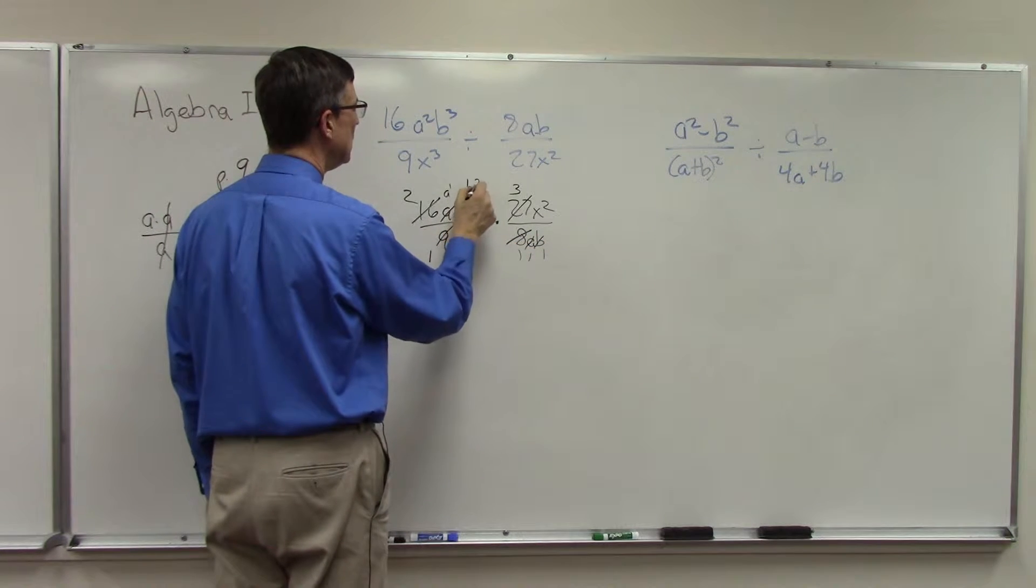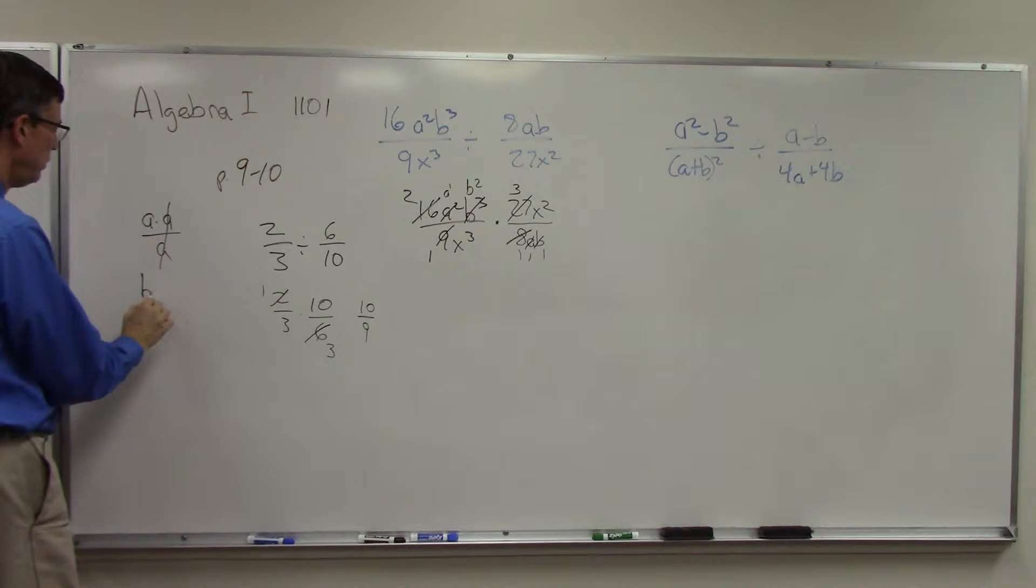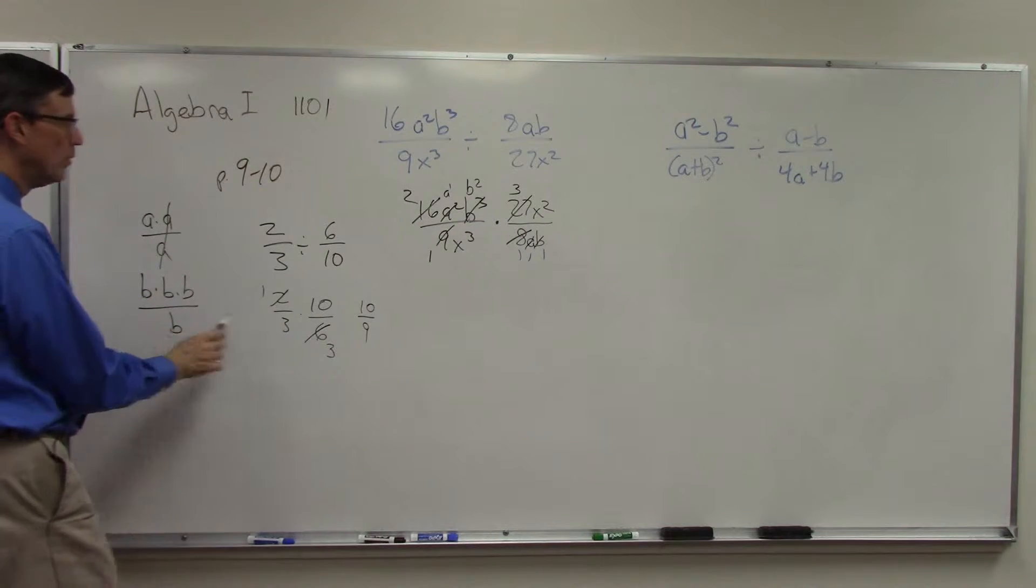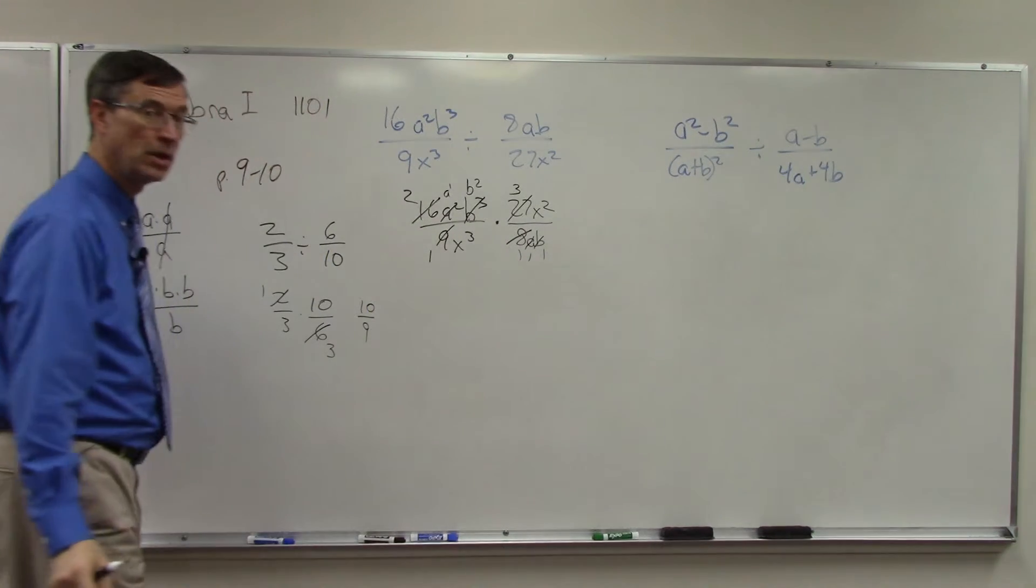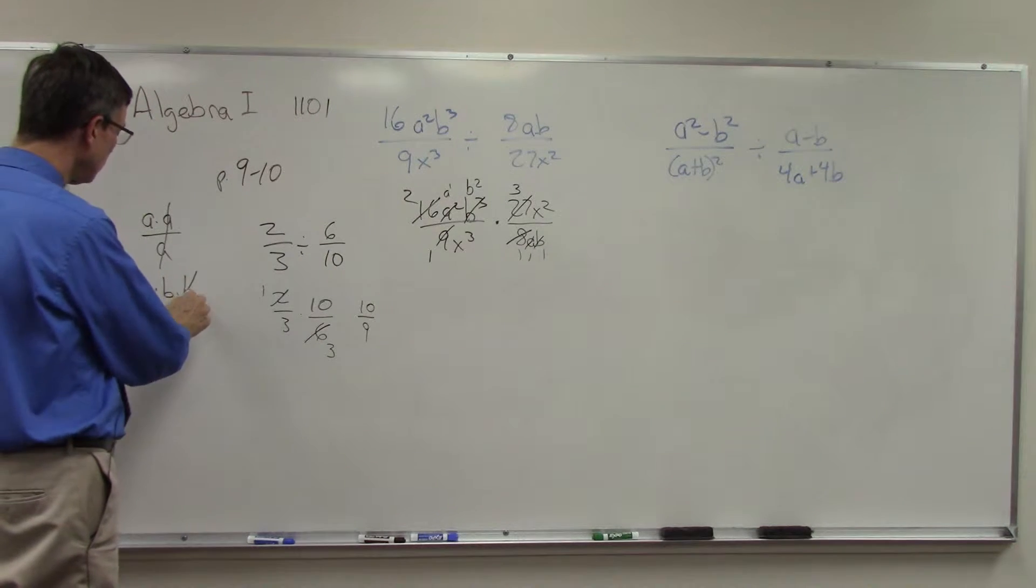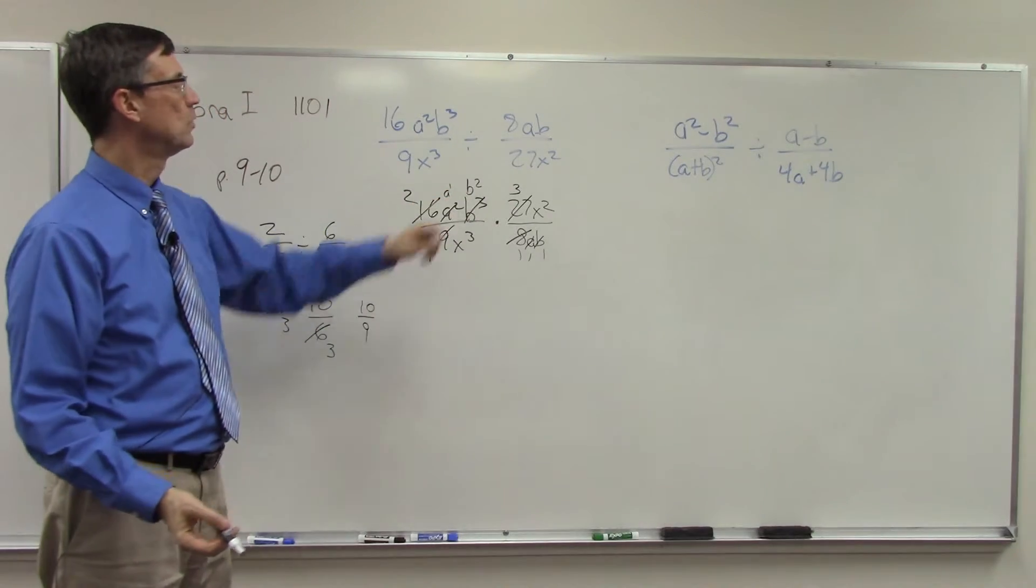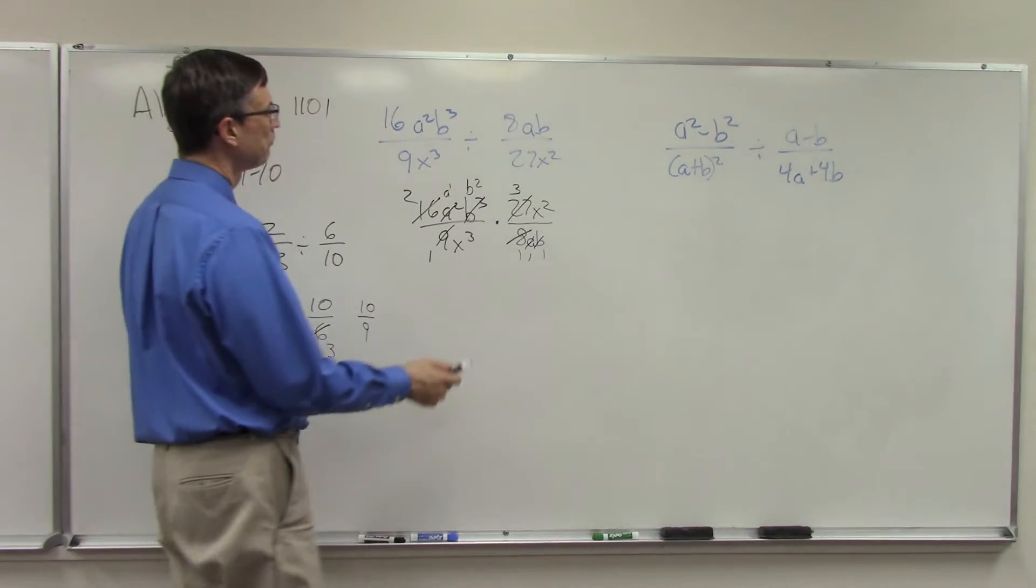The same thing happens with b. That cancels out, and this becomes b². I'm canceling one of them. It's kind of like saying b times b times b is b to the third power, and over here I have one b on the bottom. So one of these will cancel, and I'm left with two b's, which is b².